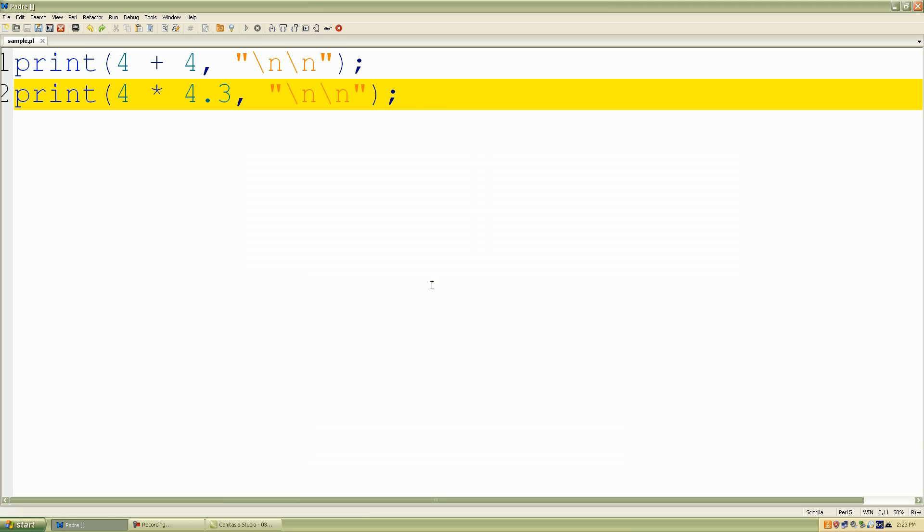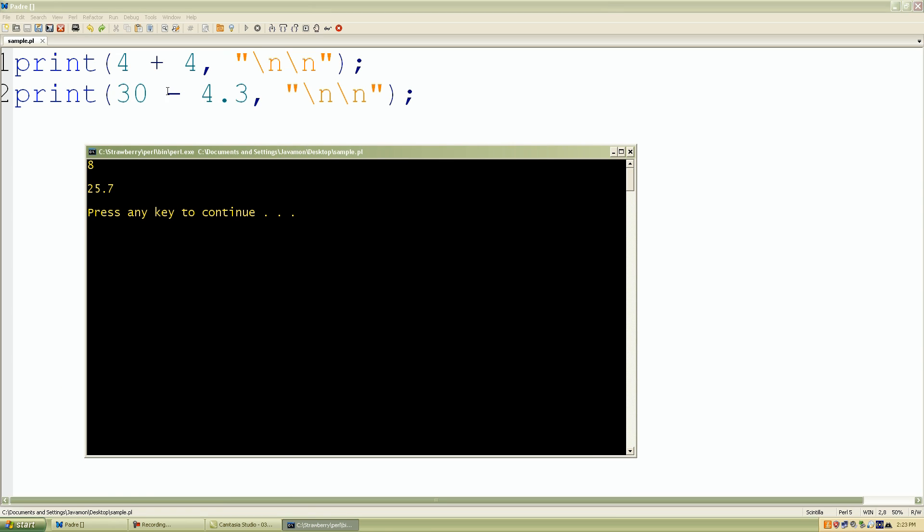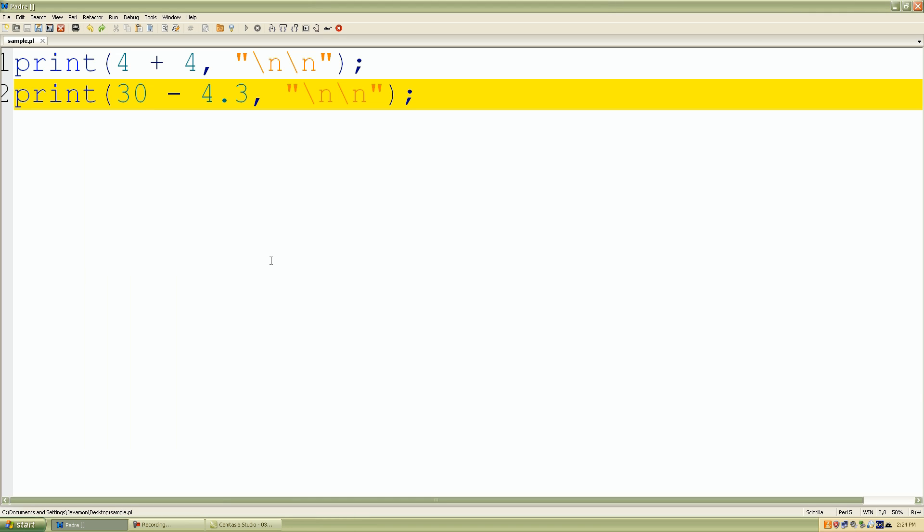So again, and like I said, for our mathematical operations, you can change this sign to a minus sign, and let's just replace 30 with 4, save the work, run our program. And again, it does mathematical calculations as well. So again, I mean, as far as the numbers, it's extremely easy. Perl looks at all numbers again as floating points or real numbers with decimal points.